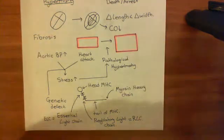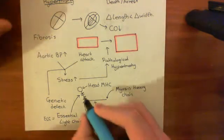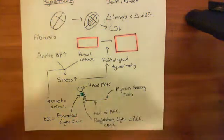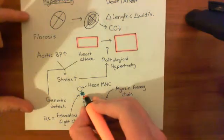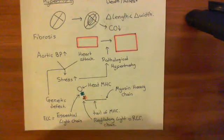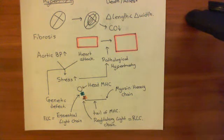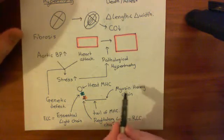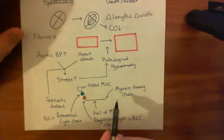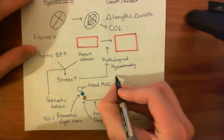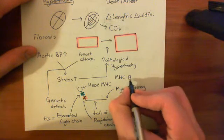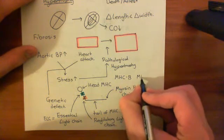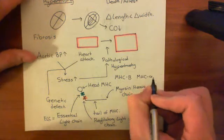Colouring these in: the essential light chain is shown in blue and the regulatory light chain in orange, both attached to the heavy chain. There are two major genes for the myosin heavy chain used in the heart: myosin heavy chain beta and myosin heavy chain alpha.